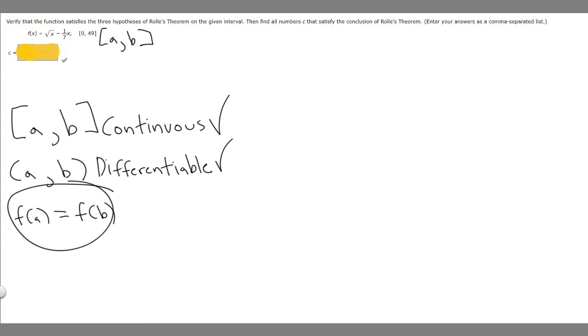Is f(b) equal to f(a)? So let's test that. So we're going to say that a is 0 and b is 49. So f(49) is equal to the square root of 49 minus 1 over 7 times 49. So if we go ahead and do this the square root of 49 is going to be 7. Then 1 over 7 times 49 is just 7. So 7 minus 7 is going to be 0.